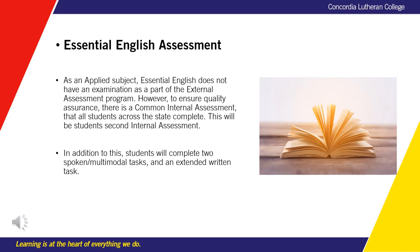As an applied subject, Essential English does not have an examination as part of the external assessment program. However, to ensure quality assurance, there is a common internal assessment as well as three other non-common internal assessments. In this common internal assessment, all students across the state who complete Essential English will complete this assessment. At Concordia, this is the student's second internal assessment. In addition to this, students will complete two spoken or multimodal tasks and an extended written task.